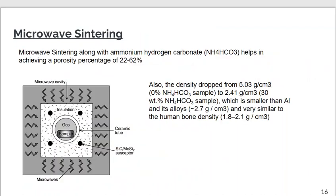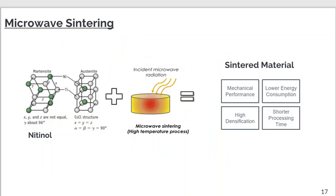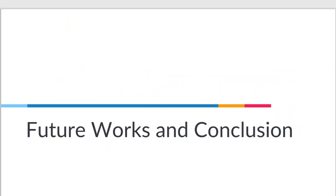With microwave sintering, the porosity level we can achieve is around 22 to 62 percent, which is really high. Compared to conventional processes, microwave sintering reduces energy consumption, possesses high heating rate, and has lower sintering time—from 150 minutes for conventional sintering down to 10 to 30 minutes for microwave sintering—with improved mechanical and physical properties and lower processing costs.